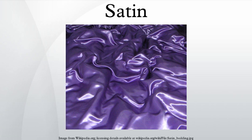A satin fabric tends to have a high luster due to the high number of floats on the fabric. Because of this it is used in making bed sheets. Many variations can be made of the basic satin weave including a granite weave and a checkweave. Satin weaves, twill weaves, and plain weaves are the three basic types of weaving by which the majority of woven products are formed.